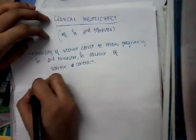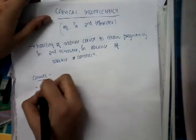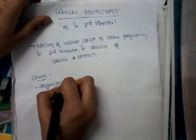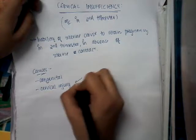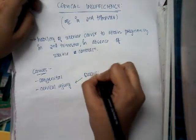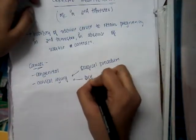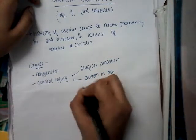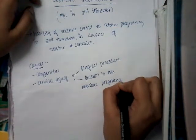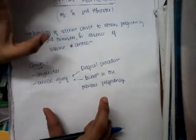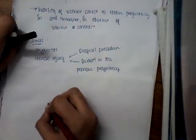What are the causes of cervical insufficiency? The causes can be congenital, or it can be a cervical injury which occurs during a surgical procedure, or there can be a laceration in a previous pregnancy. Even this can cause a cervical injury. In such cases, the cervix cannot hold the baby, and as a result it will cause pregnancy loss.